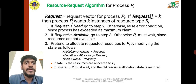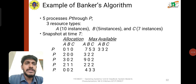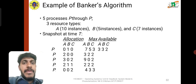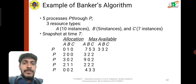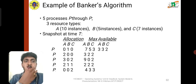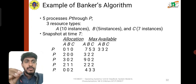For the Banker's Algorithm example, we have 5 processes P0 through P4. The snapshot at that time shows Allocation, Max, and Available for resources A, B, and C. Process allocations are: P0 has 0,1,0; P1 has 2,0,0; P2 has 3,0,2; P3 has 2,1,1; P4 has 0,0,2. Max values are given, and Available for A, B, C is 3,3,2 and 9,2,2 with other combinations also shown.